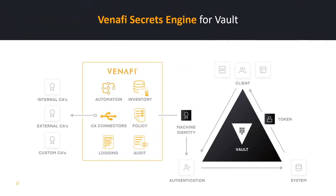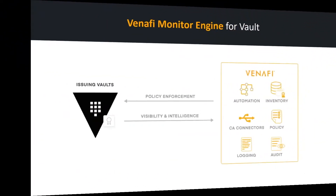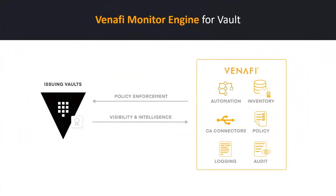HashiCorp is a strategic partner of Venify and because of that we have a number of very tightly integrated solutions available for DevOps teams inside an organization. The Venify secrets engine allows for publicly trusted certificates to be issued from Vault through Venify's Trust Protection Platform. The Venify monitor allows DevOps engineers to continue using Vault's built-in certificate authority to get that speed of issuance, with the added ability for the security team to set policy and gain valuable visibility and intelligence around the machine identities being issued by Vault.